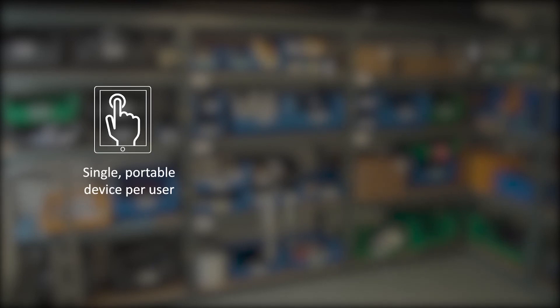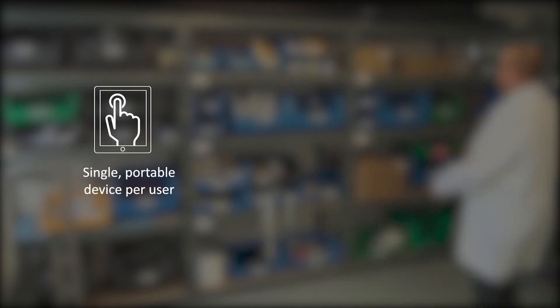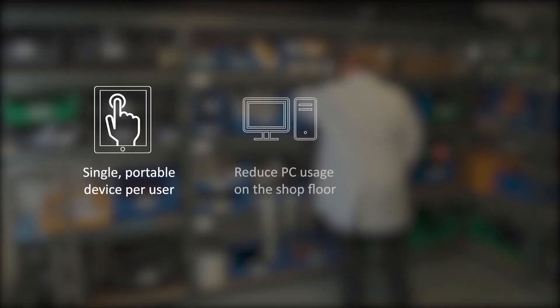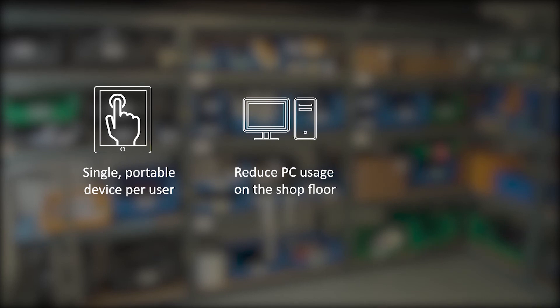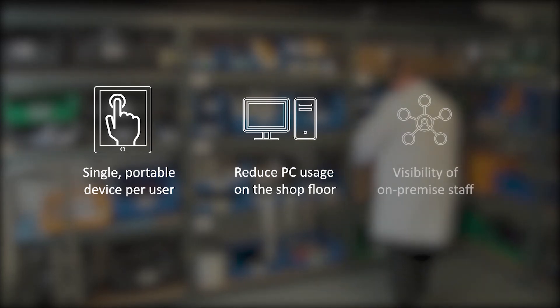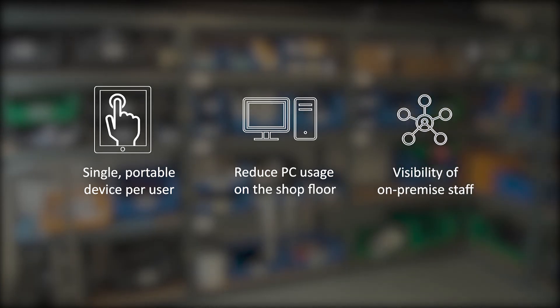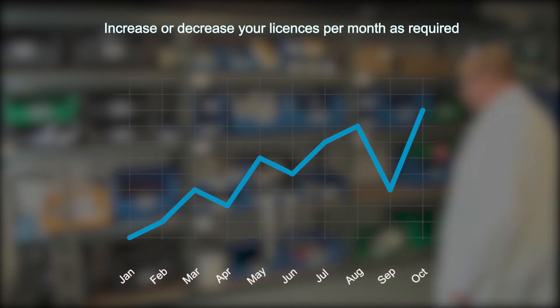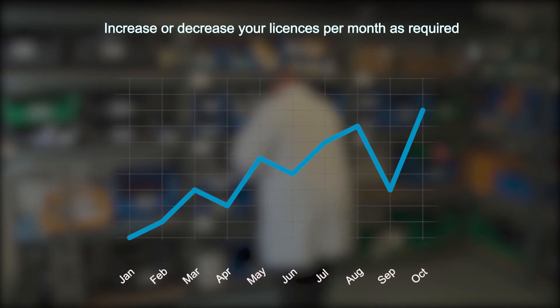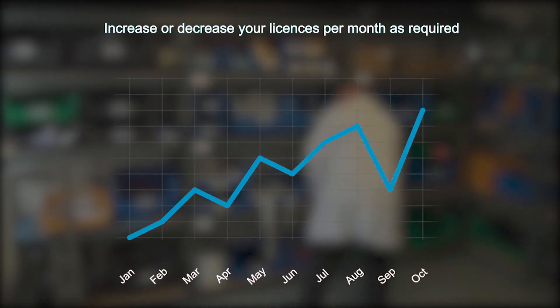That gives you a brief overview of 123 Mobile. With one interface you can handle many stock and shop floor related transactions on a low-cost tablet device. This helps you to minimise the use of, or even remove, PCs from the shop floor, freeing up space, reducing traffic, and the time it takes to perform common tasks. You also have visibility of which staff are clocked in or out. As with the core 123 Insight system, you can take as many or as few licences of 123 Mobile as you need, and increase or decrease these on a monthly basis as required.